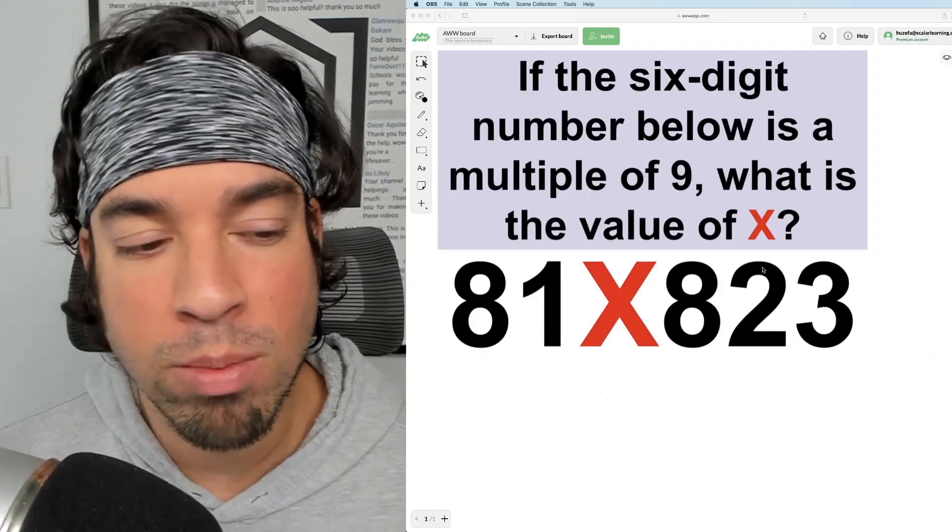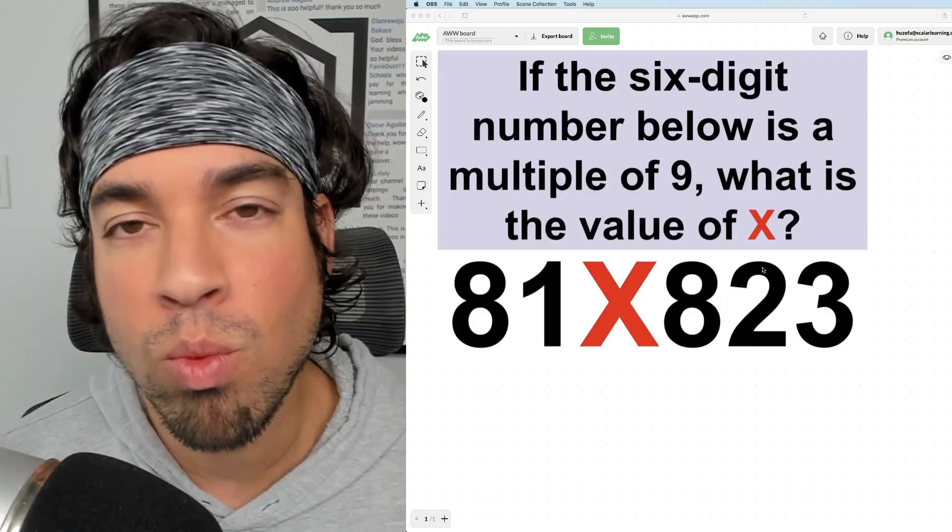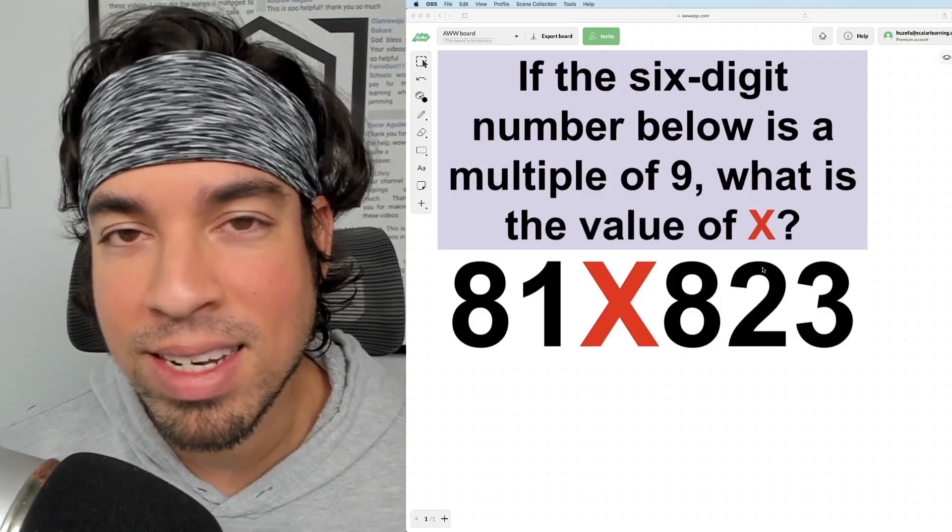So again, this is a six-digit number. We've just got that thousands place digit missing. You're trying to figure out what it needs to be in order for this number to be divisible by nine.